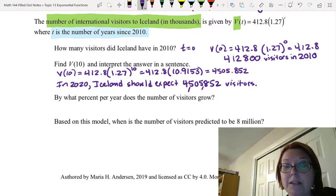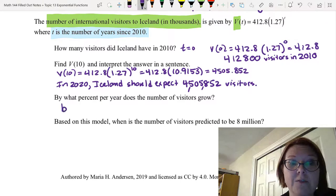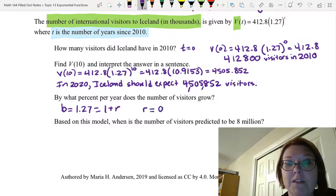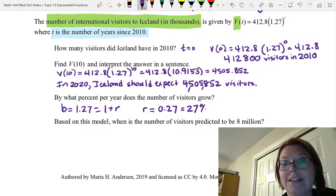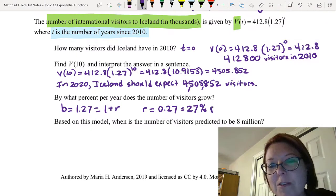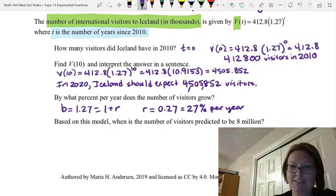Now, by what percent per year does the number of visitors grow? Well, let's just look at the growth factor. We know that the growth factor, b, is 1.27. And this is 1 plus the r value, which means that the r value must be 0.27 or 27%. The number of visitors is growing at 27% per year, which is an astounding growth rate for something like this.